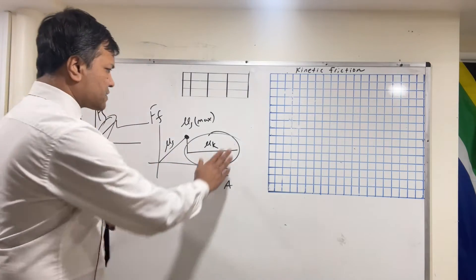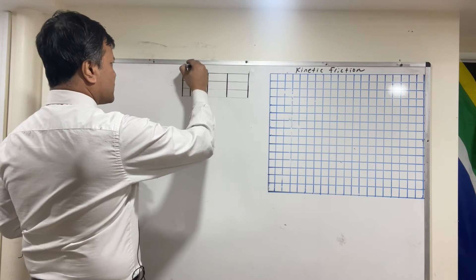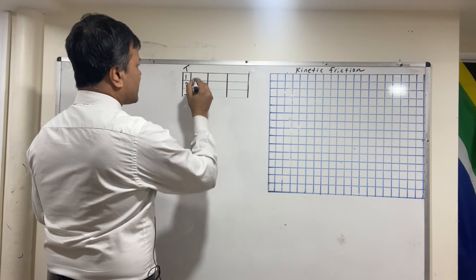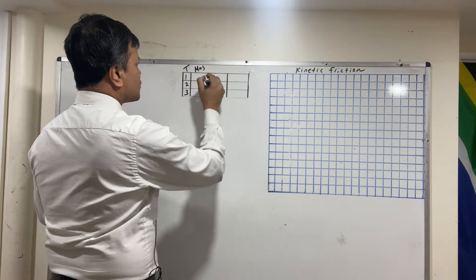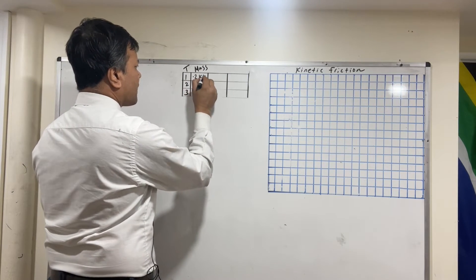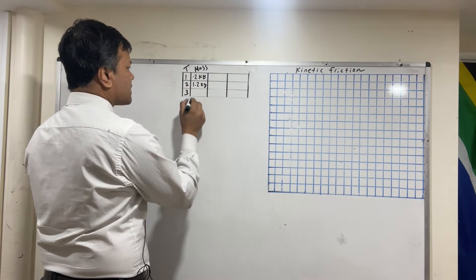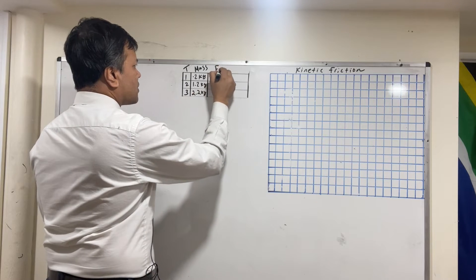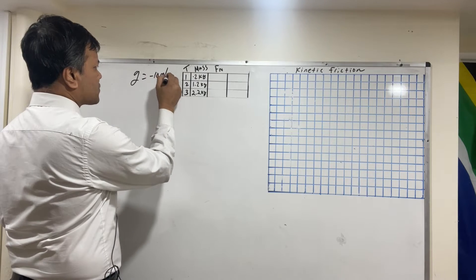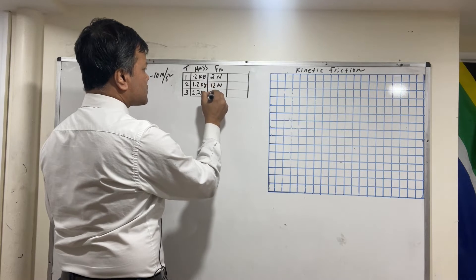In the lab, I collected data for three trials. The masses were: 200 g = 0.2 kg, 1200 g = 1.2 kg, and 2200 g = 2.2 kg. For normal force, I'm using acceleration due to gravity as 10 m/s², so that gives us 2 newtons, 12 newtons, and 22 newtons respectively.